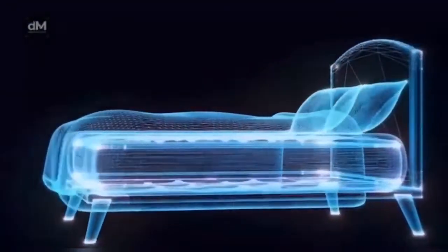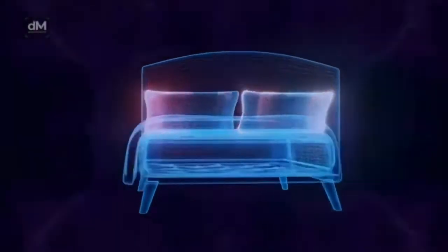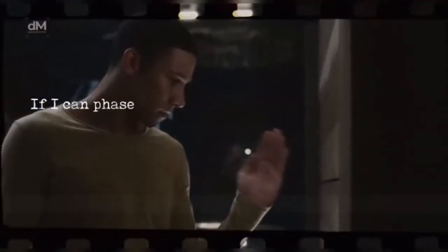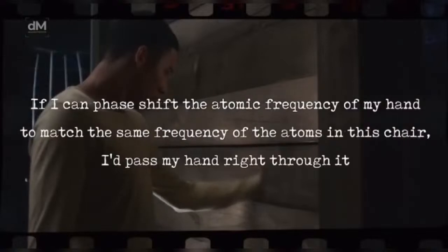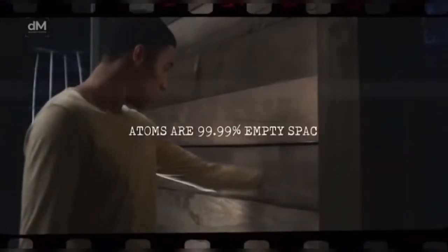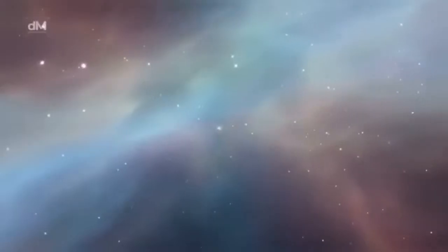For example, the only thing stopping my hand from going through this chair is the repulsion of the electromagnetic frequencies. I don't actually touch the chair. And so if I can phase shift the atomic frequency of my hand to match the same frequency of the atoms in this chair, I pass my hand right through it because atoms are 99.999% empty space.